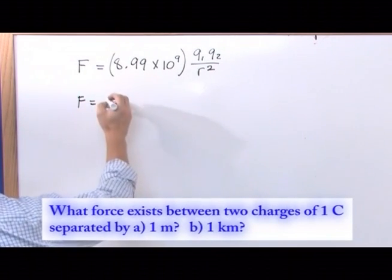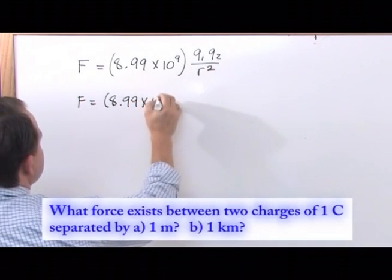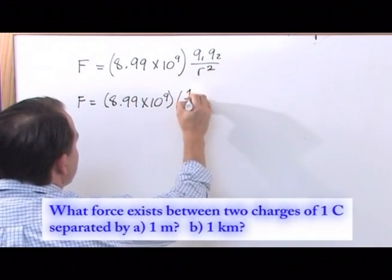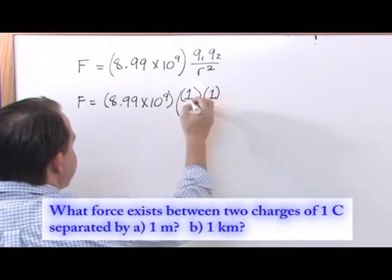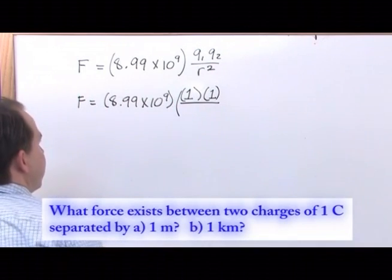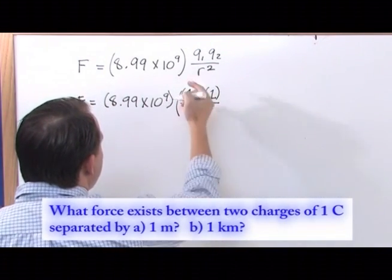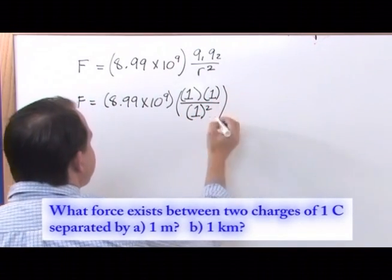first let's do one meter. So what we're going to have is 8.99 times 10 to the 9, and over here you're going to have, it's one coulomb, and the other charge is one coulomb, they're both positive. We're just going to take the absolute values there, just the same thing, one. And you're dealing in coulombs up here, so you just put the one. On the bottom you're dealing in meters, so it's going to be one squared, the distance between the two charges.